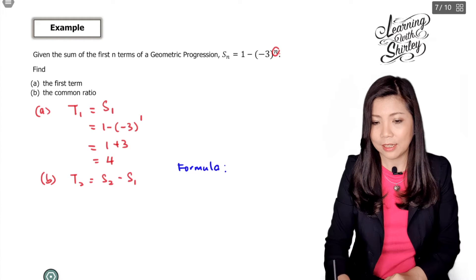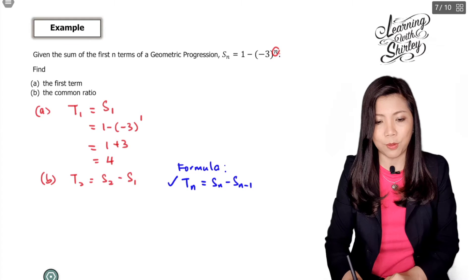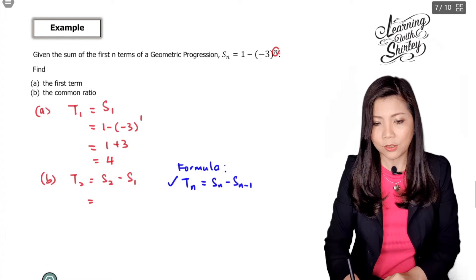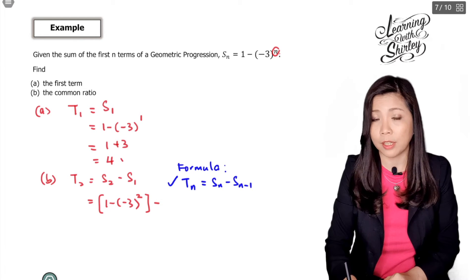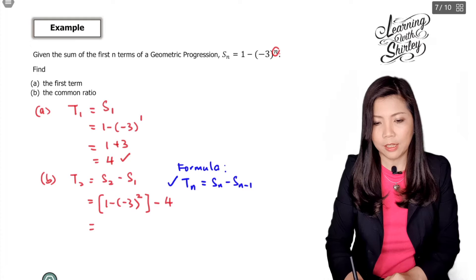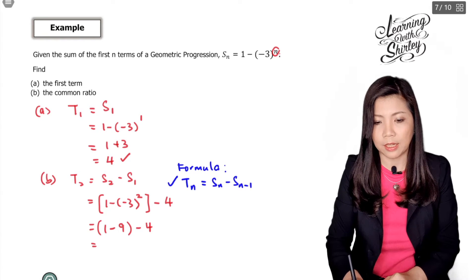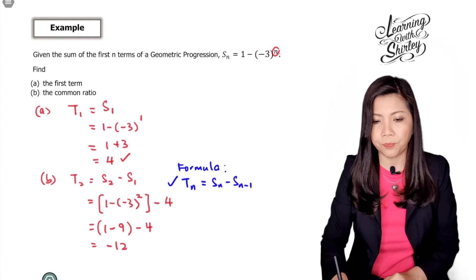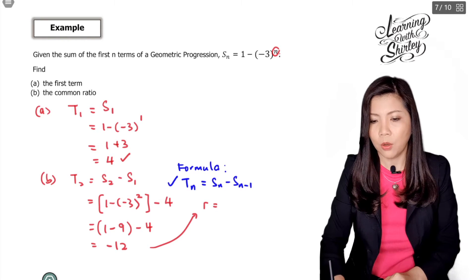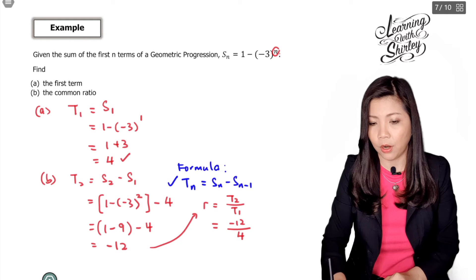For part (b), to find the common ratio we first find t2. Using tn equals Sn minus Sn minus 1, t2 equals S2 minus S1. S2 equals 1 minus negative 3 to the power of 2, which gives 1 minus 9, equals negative 8. So t2 equals negative 8 minus 4 equals negative 12. The common ratio r equals t2 over t1, which is negative 12 over 4, therefore r equals negative 3.